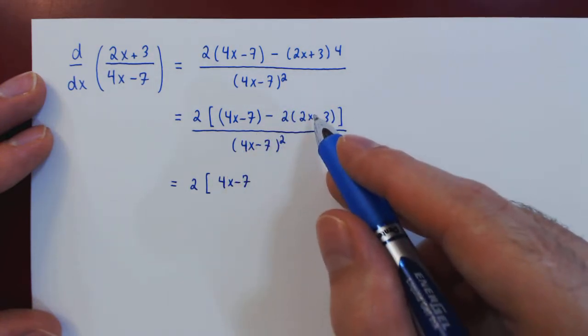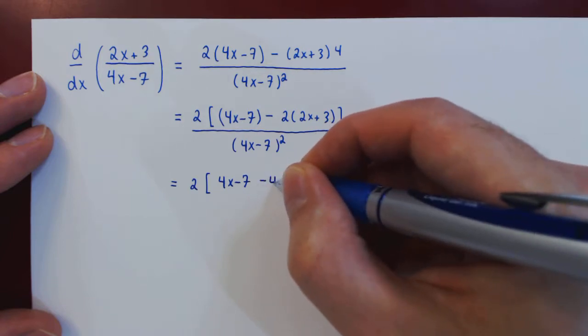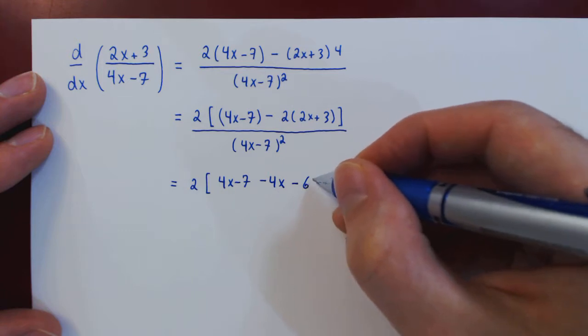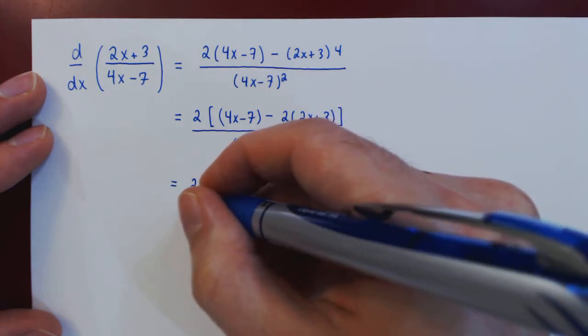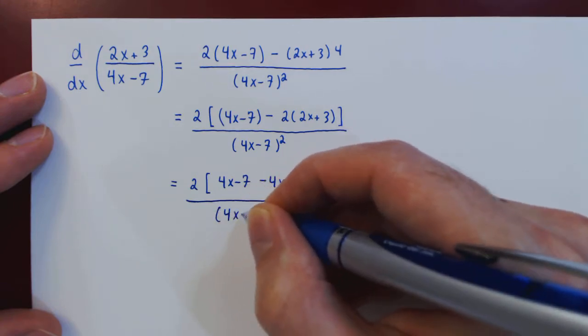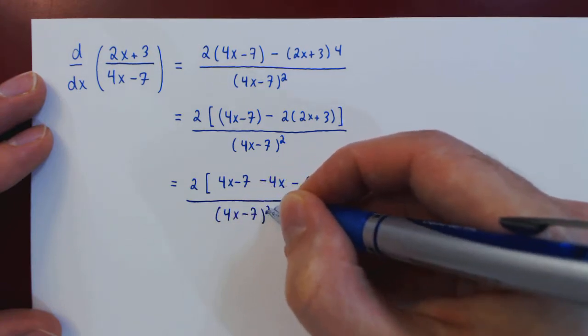And minus 2 times 2x minus 4x, minus 2 times negative 6, negative 6.